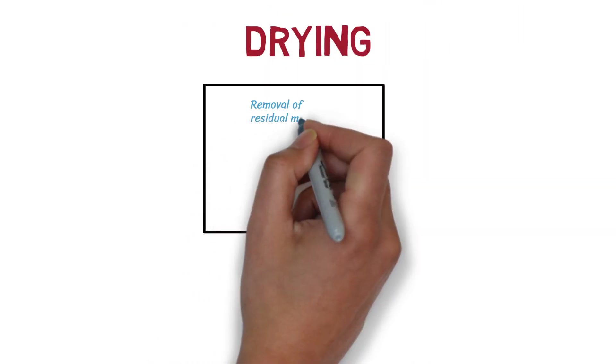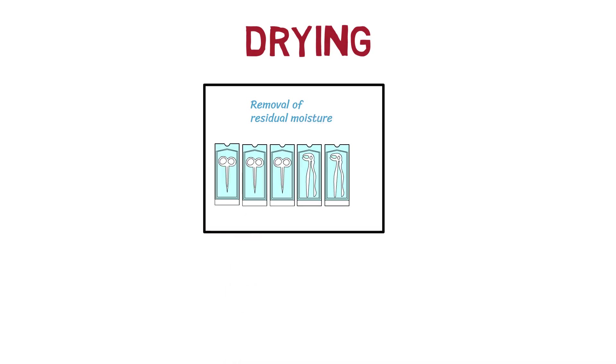After the exhaust phase, removal of residual moisture from sterilized items may be required to prevent contamination or corrosion. This process is called drying.